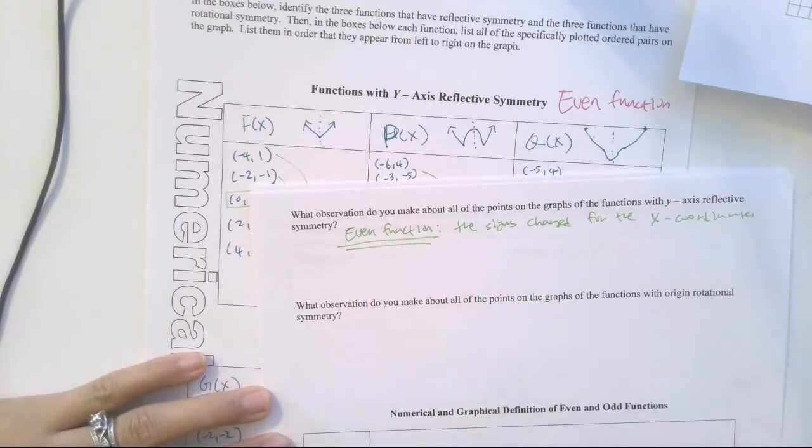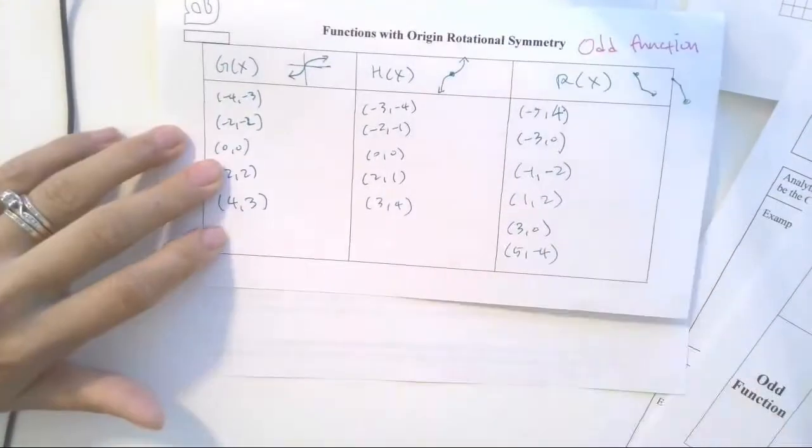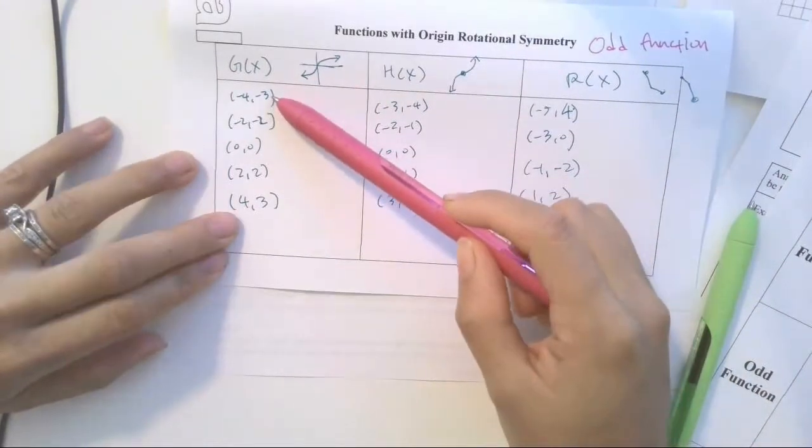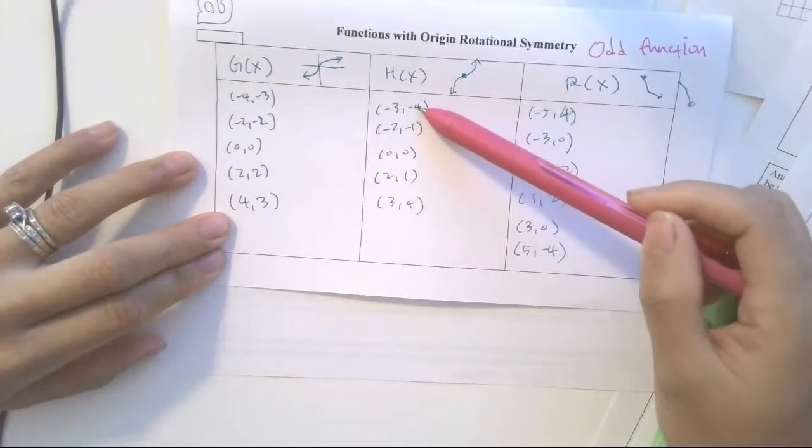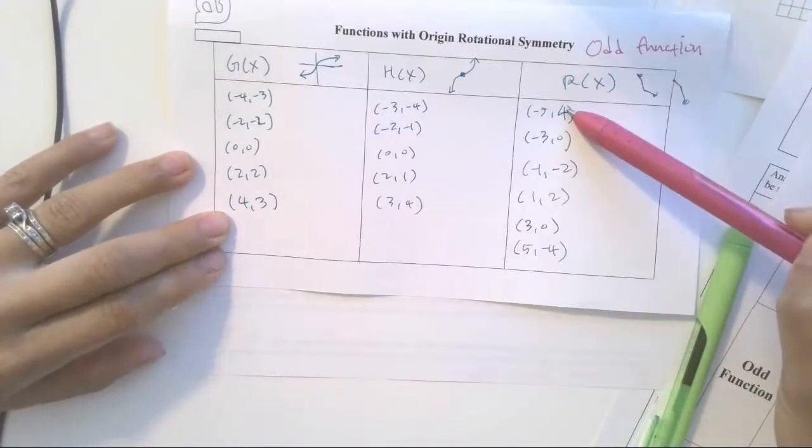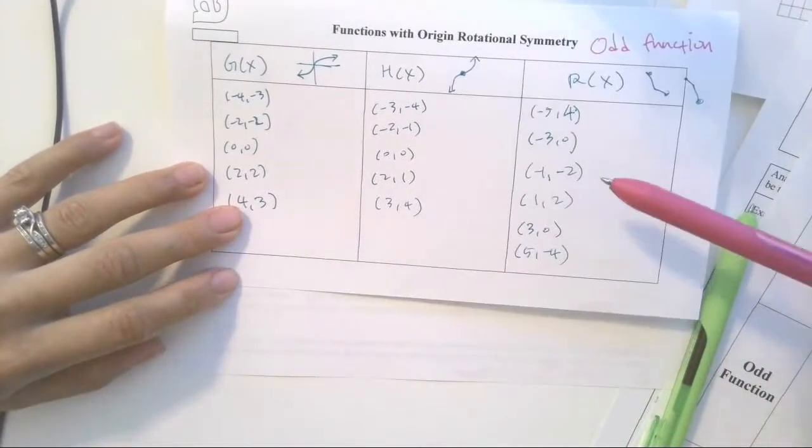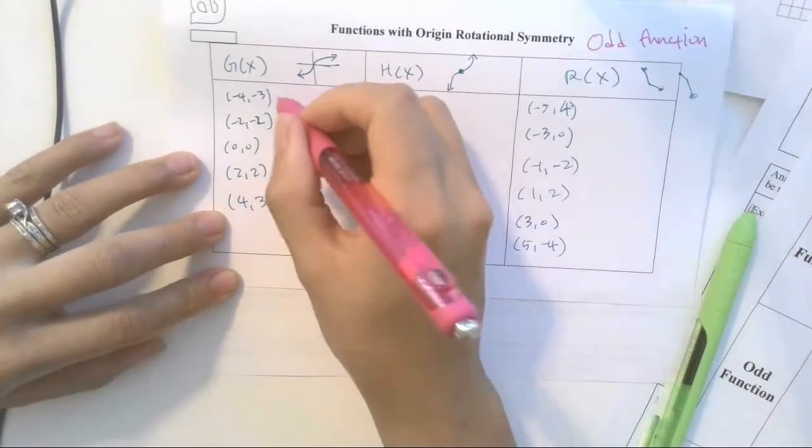All right, now then how would I summarize that about the odd function? Let's see what's happening here. Negative 4 comma negative 3, 4, 3, negative 2, 2, negative 2, 2, 2, negative 3, negative 4, 3, 4, negative 2, negative 1, 2, 1, negative 5, 4, 5, negative 4, negative 3, 0, 3, 0, negative 1, negative 2, 1, 2. So what pattern do you notice about the odd functions then?